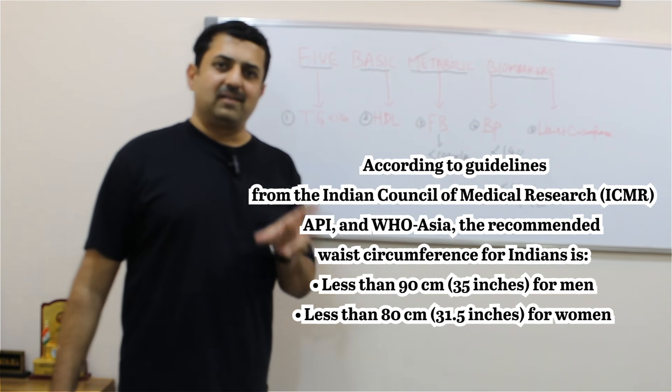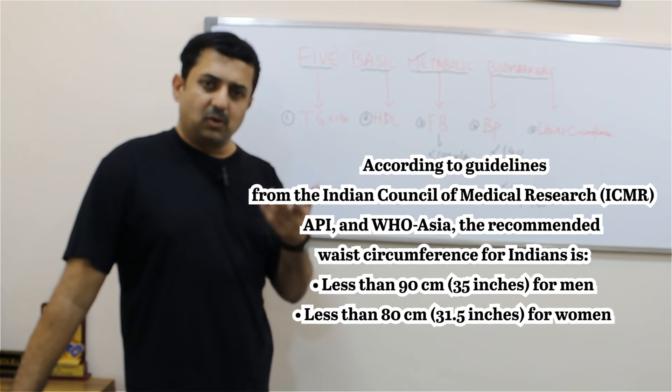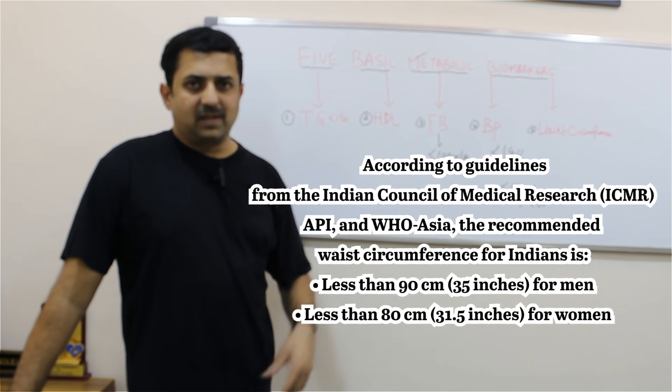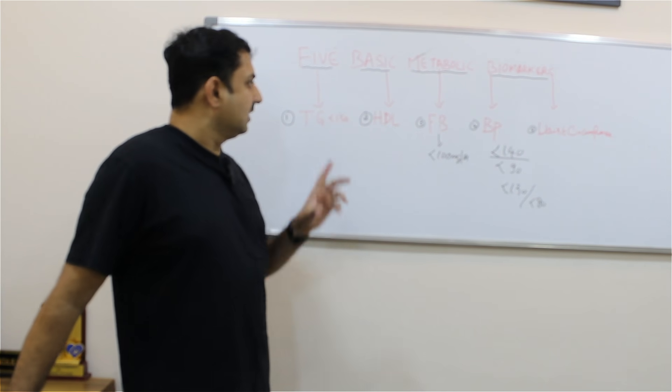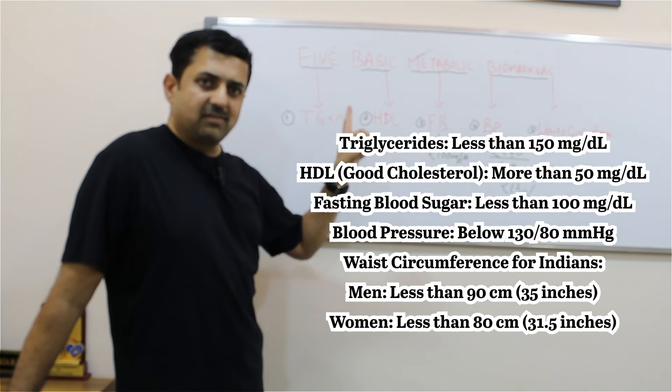If these parameters are within normal limit, more or less you can say you are having good metabolic health. There are various other parameters like HOMA-IR and a few more tests, but for basic things remember this: triglycerides less than 150, HDL more than 50.